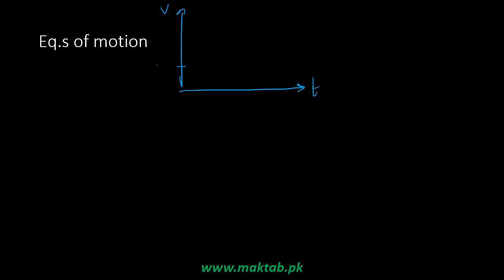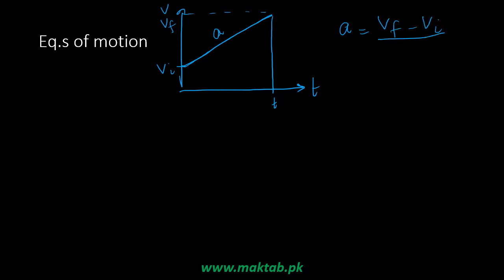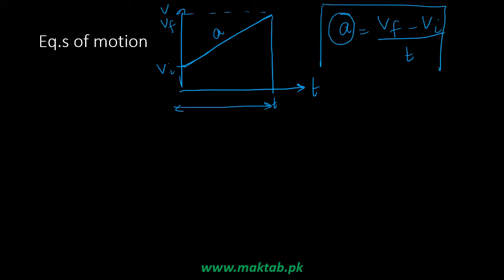We have an object with an initial velocity, then with uniform acceleration, it reaches a final velocity VF. If you understand this graph, you can understand all 4 equations of motion. The slope of this line is (VF minus VI) divided by time T. We know that the change in velocity divided by change in time is acceleration. So this gives us our first equation of motion.